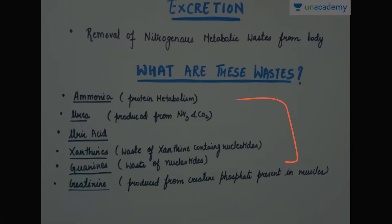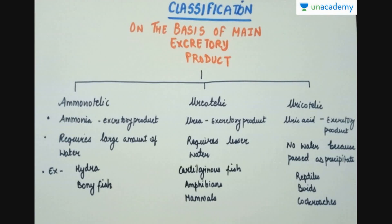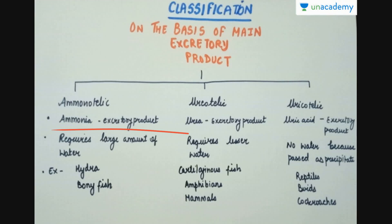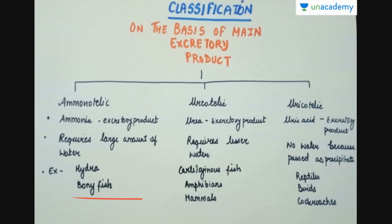Now, the classification of different types of organisms is based on the excretory product they excrete. First are the ammonotelic organisms, which have ammonia as their excretory product. Ammonia is highly toxic and can be excreted only when there is a large amount of water available. Human beings don't have that ample water, so ammonia cannot directly be excreted from our body. But it can be done in the case of fishes and aquatic organisms like hydra and bony fishes, because water dilutes the toxicity of ammonia.